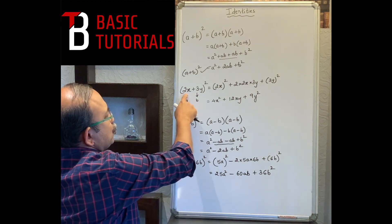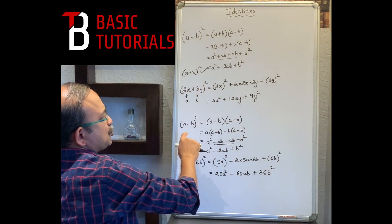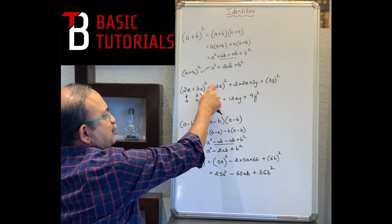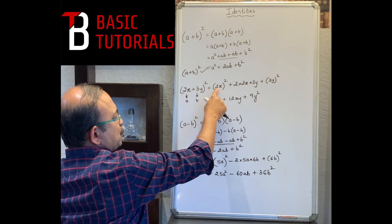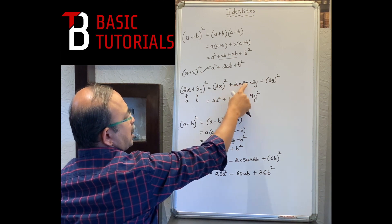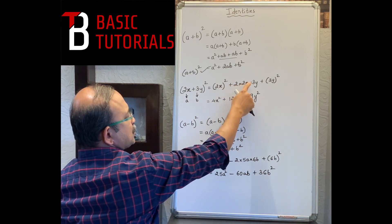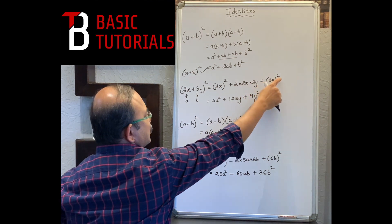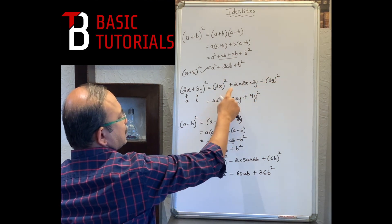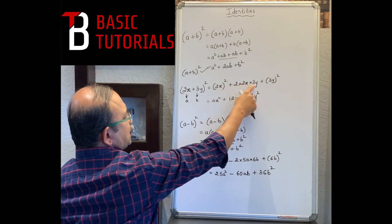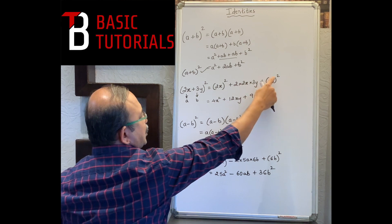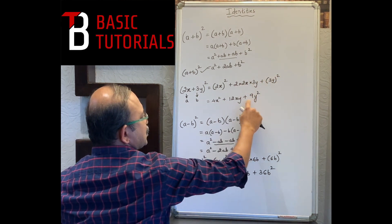For (2x + 3y)², here 2x is a and 3y is b. So we get: (2x)² + 2×(2x)×(3y) + (3y)². That gives: 4x² + 12xy + 9y².